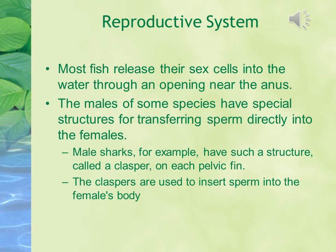The reproductive system. Most fish release their sex cells into the water through an opening near the anus. The males of some species have special structures for transferring sperm directly into the females. Male sharks, for example, have such a structure called a clasper on each pelvic fin. The claspers are used to insert sperm into the female's body.